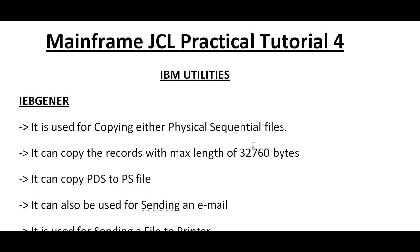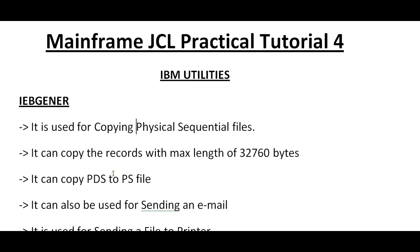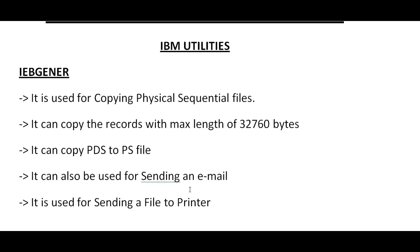IEBGENER is used for copying physical sequential files — that is, to copy from one physical sequential file to another. It can copy records with a maximum length of 32,760 bytes. The sending file and the receiving file should have a maximum of 32,760 bytes. It can copy PDS to PS file, and it can also be used for sending an email, which is very much used in real time.